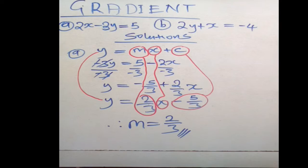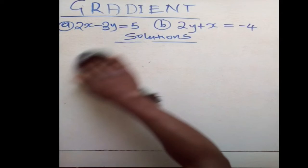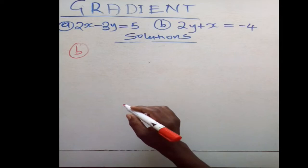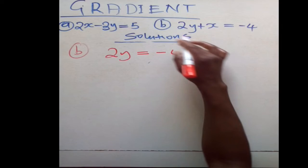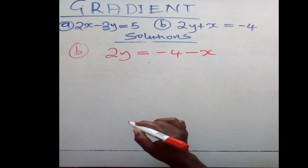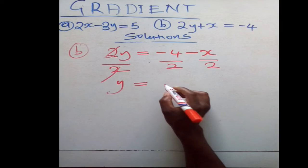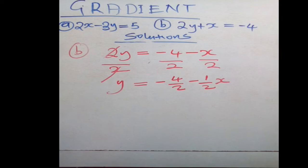Moving to question B: 2y + x = -4. The first stage is to make y the subject of the formula. Moving x to the other side gives 2y = -4 - x. Then divide throughout by 2 to get y = -4/2 - (1/2)x.